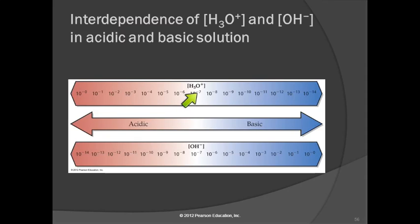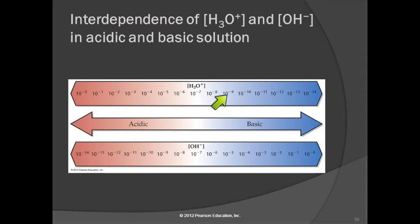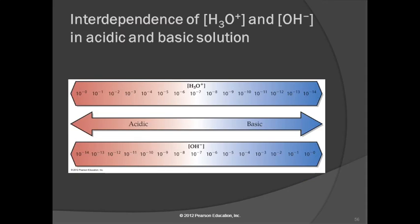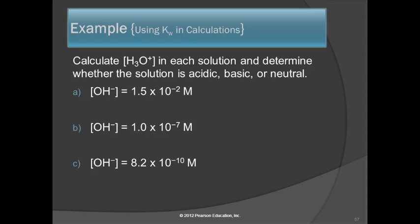Here we're showing hydronium ion concentrations and hydroxide ion concentrations. As we go to the acidic end, the hydronium ion concentration increases — 10 to the minus 1 is larger than 10 to the minus 3. At the same time, the hydroxide ion concentration goes in the opposite direction. As we go to the acidic side it becomes less; as we go to the basic side it becomes more. They are inversely related — if one goes up, the other goes down.